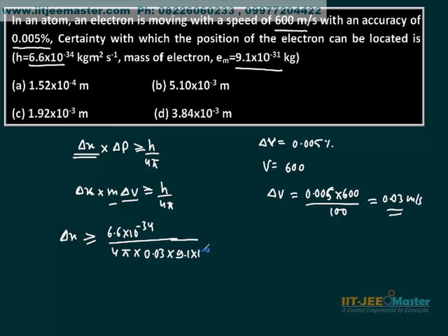The mass is 9.1 times 10 to the power minus 31. The minimum delta x or the minimum uncertainty will be 1.92 times 10 to the power minus 3 meters.